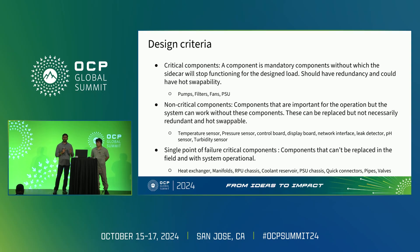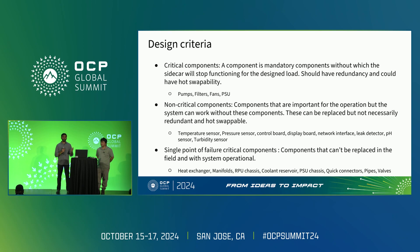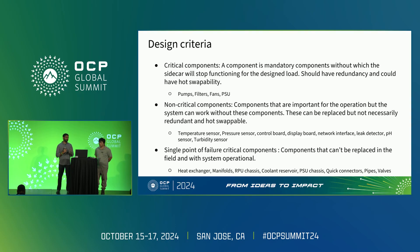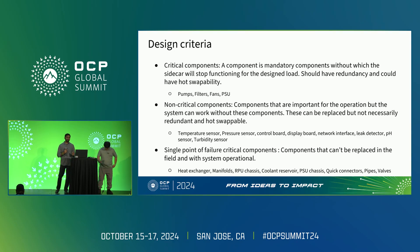Non-critical components are defined as components that need to be present but do not necessarily require hot-swapping — for example, a thermocouple or pressure sensor. Without them, the control system can automatically default to maximum cooling capacity and still operate, though not very efficiently. These need to be replaced in a timely fashion for efficiency, but they will not stop the sidecar from operating.